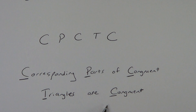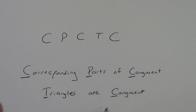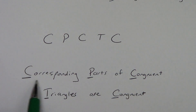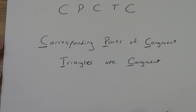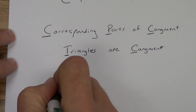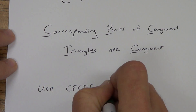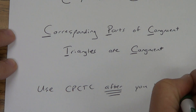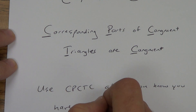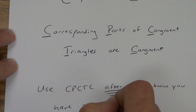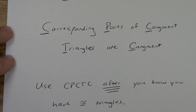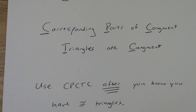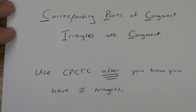You need to memorize this. It's going to show up on your quiz, your test, your midterm, and it's going to show up in proofs for lots of the rest of the chapters, and probably on your final exam. You need to know these letters stand for this phrase, and you need to know when to use it. The main thing: use CPCTC after — that's very important — after you know you have congruent triangles. If you try to use CPCTC before you have congruent triangles, you will get it wrong.